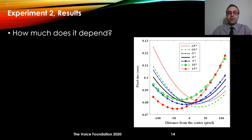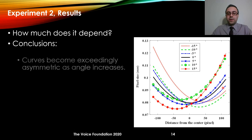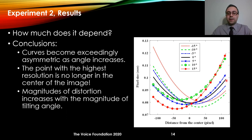A further analysis was run to quantify the effect. At zero imaging angle, the two ends of the curve have similar pixel sizes and the distribution is symmetric around zero. As the imaging angle increases — for example at 15 degrees — the two ends have quite dissimilar pixel sizes and the shape becomes asymmetric. The point with minimum pixel size corresponds to maximum spatial resolution; at zero imaging angle it is at the center, but as the imaging angle changes it shifts toward one end. The magnitude of distortion increases with the magnitude of the tilting angle.